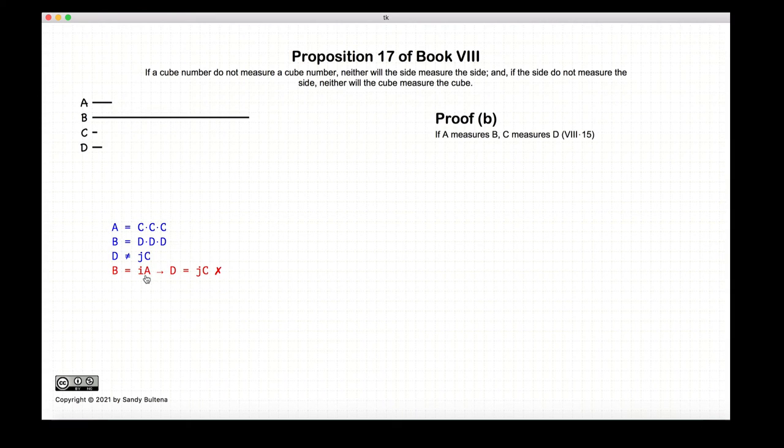If A measures B, according to Proposition 15, C also measures D. But our initial condition has that C does not measure D. So there is our contradiction, and thus the condition that A measures B is false. We have that A does not measure B, and that is the second part of this proof.